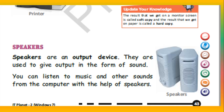Printer — a printer is an output device which is used to get output on paper. Speakers — speakers are an output device. They are used to give output in the form of sound. You can listen to music and other sounds from the computer with the help of speakers.